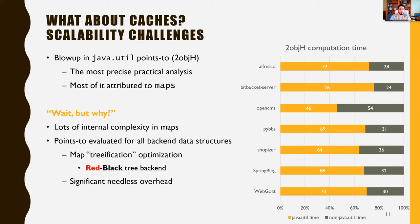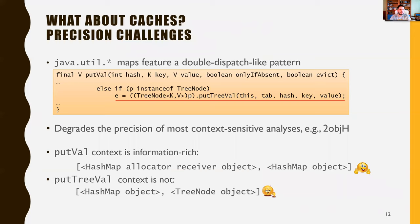This comes down to the internal complexity of maps, something that we want to remove. This loss of scalability also means a loss of precision. What we identified is that Java Util maps feature a dynamic-dispatch-like pattern. The PutVal method of HashMap is first called with the map itself as a receiver, but then PutVal is called with a tree node as the receiver, and now the map is passed as a parameter. This pattern greatly degrades the precision of even the most precise analysis, like the two-object-sensitive analysis.